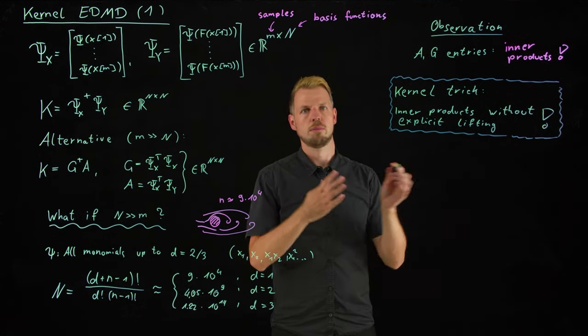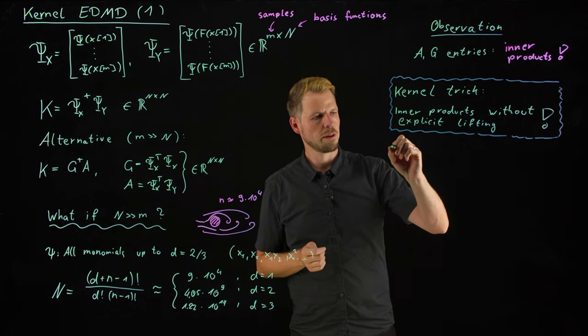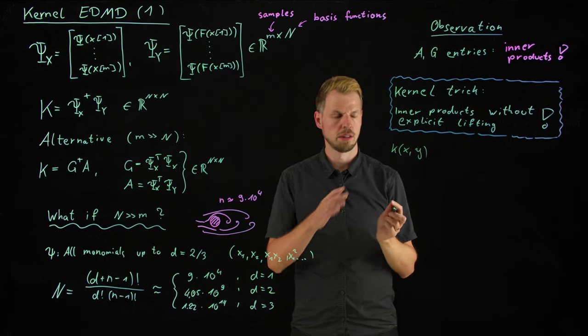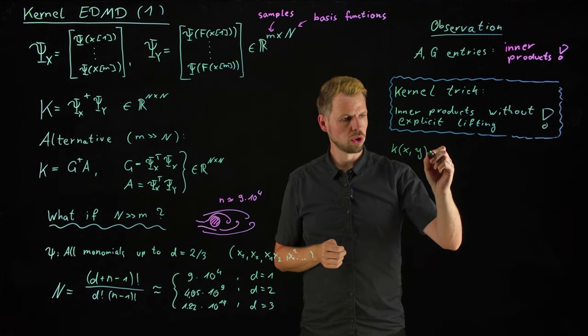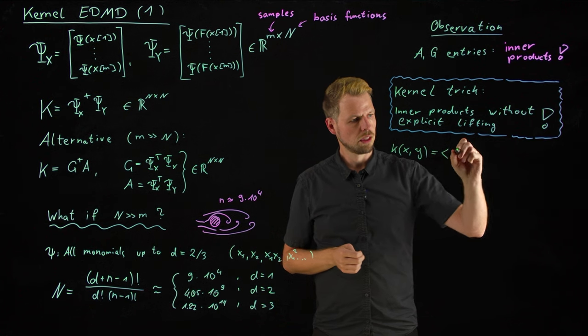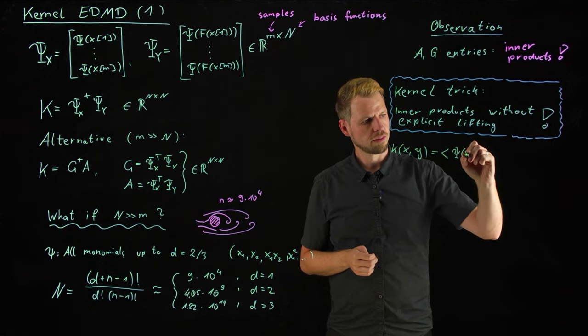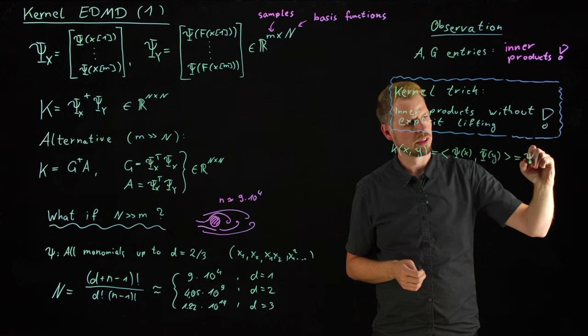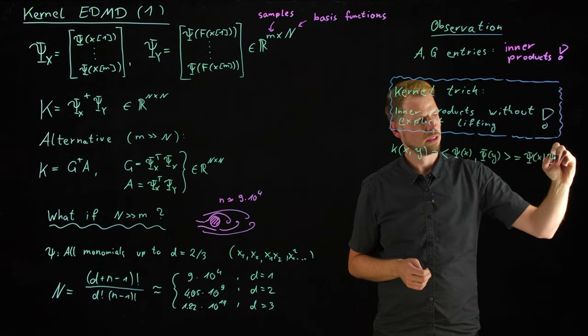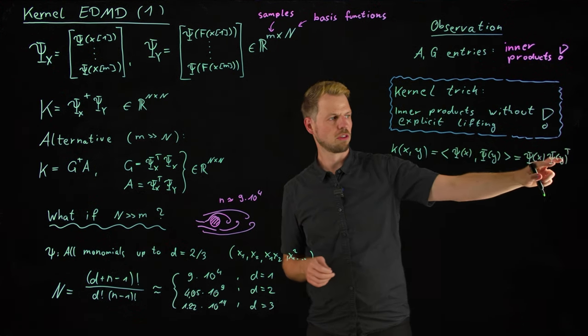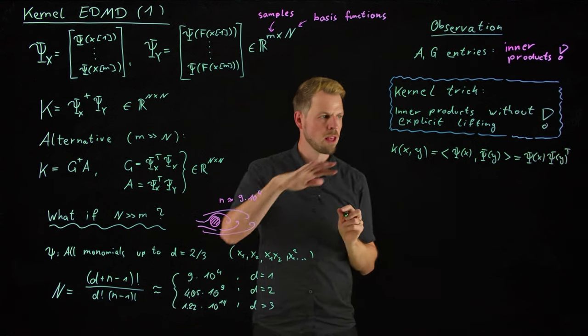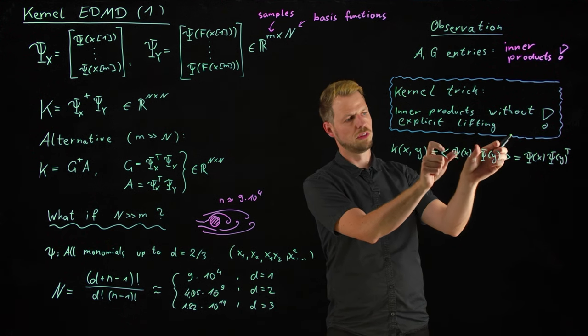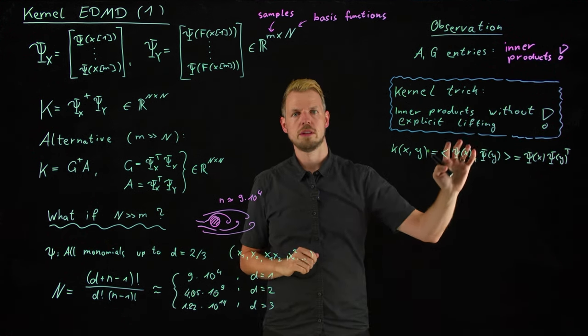So, this is what we refer to as the kernel trick. And the goal in kernel-based dynamic mode decomposition is simply to use the kernel trick or reformulate this regression problem in such a way that we can apply the kernel trick. But before we go there, let's apply one or compute one very simple example that is very frequently used. So, what we have is a kernel function K that takes in two samples, right? And then what it spits out is the solution of this inner product. So, psi of x and psi of y or in the same way, psi x times psi of y transposed.